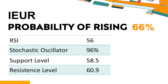IEUR's short-term support level is 59.2. If it falls below 59.2 during the session, it will have a chance to test 58.5. IEUR's short-term resistance level is 60.6. If it breaks through 60.6 during the session, it will look up to 60.9.